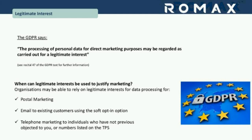For telephone marketing, if they have not previously objected to being contacted by telephone and their number is not listed on the Telephone Preference Service, you may continue to do so. On all three of these elements, you must continue to allow recipients to opt out of further communication at all times. You must make it blatantly clear why and how you are going to be using their data, and allow them ease by which to change their preferences.